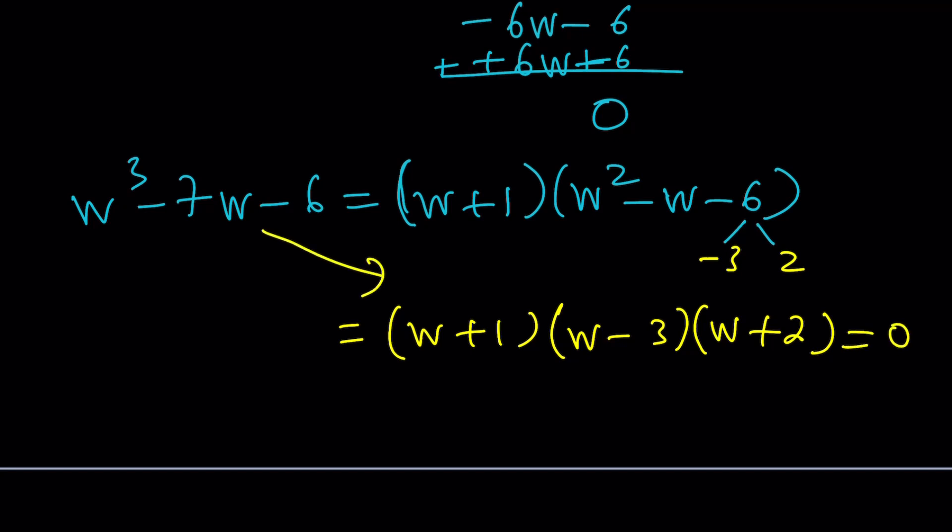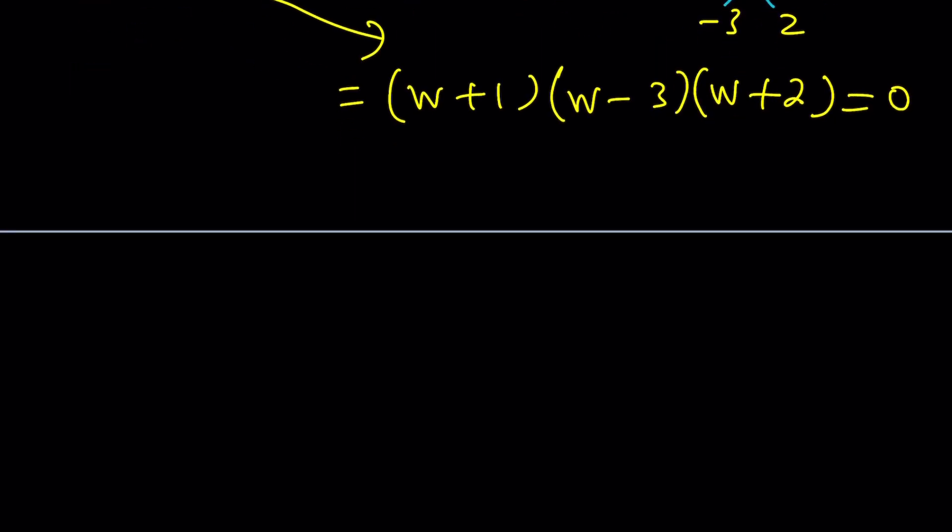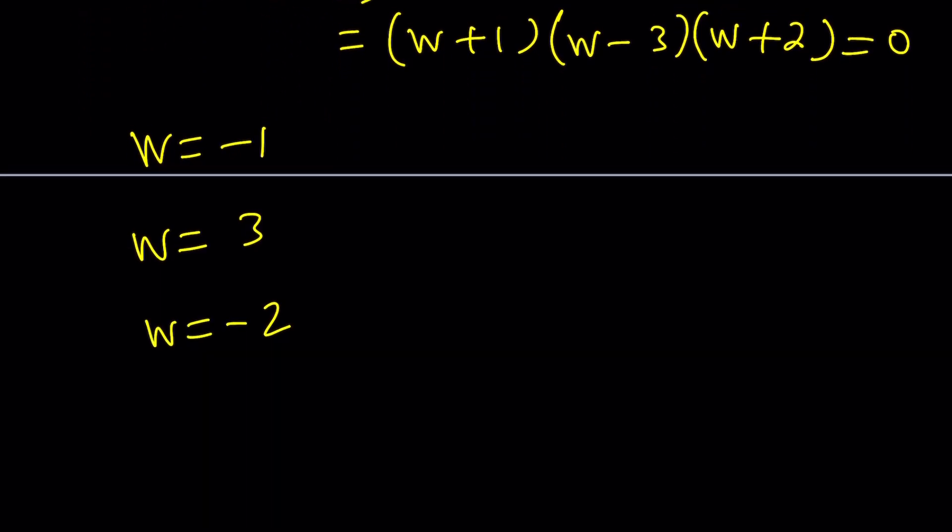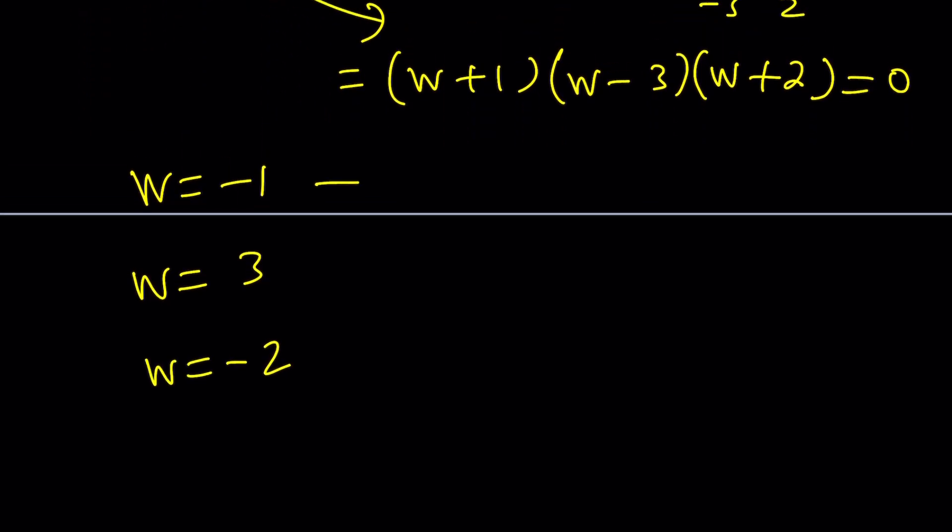So, what happens? We got the solutions. W equals negative 1. W equals 3. And W equals negative 2. We already talked about negative 1. That's actually how we got the factor W plus 1. But, from here, we have to back substitute.